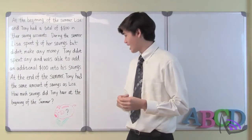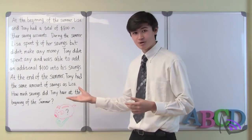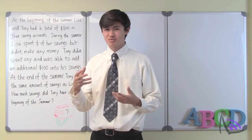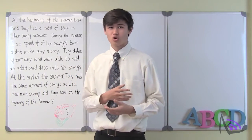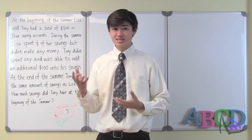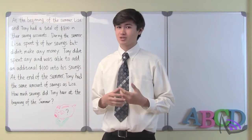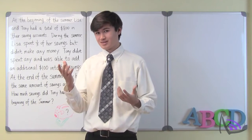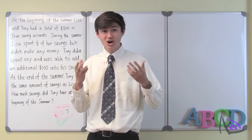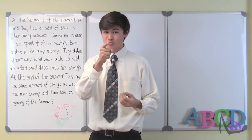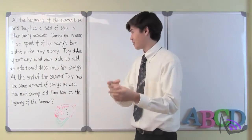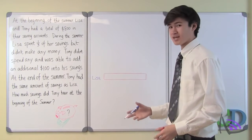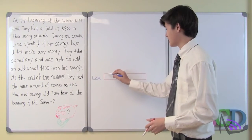At the end of the summer, Tony had the exact same amount of savings as Lisa, and they asked us: how much savings did Tony have at the beginning of the summer? How should we approach this problem? Since it seems very complicated, we don't know how much Lisa had at the beginning or end, and we don't know how much Tony had at the beginning or end. While there are a lot of unknowns, we know just what to do about that. Let's make some bar diagrams. First, we'll use this bar to represent how much Lisa had at the beginning of the summer.